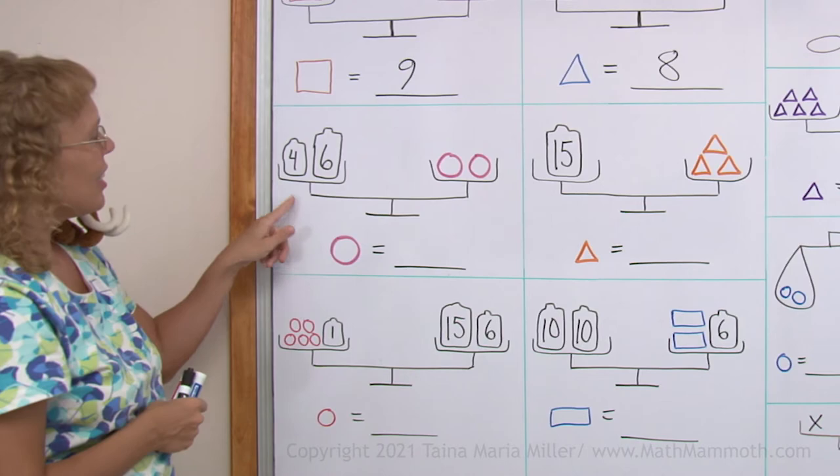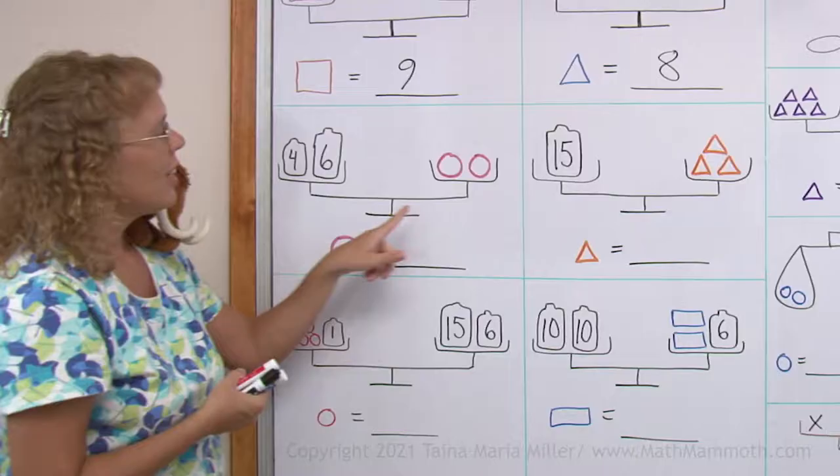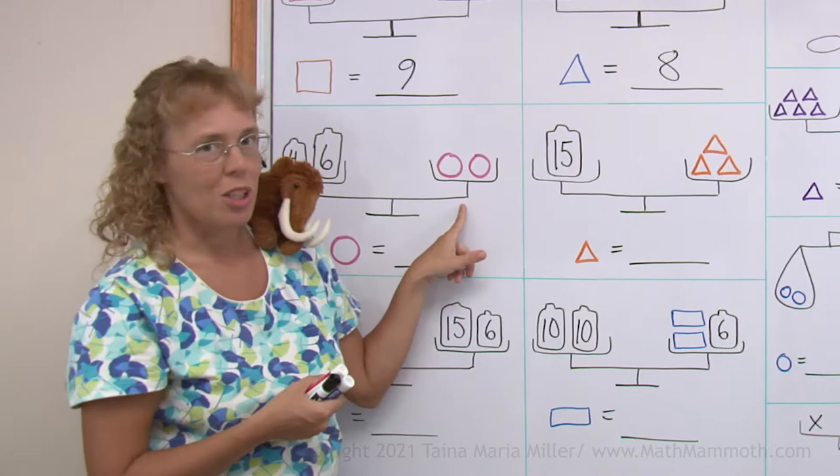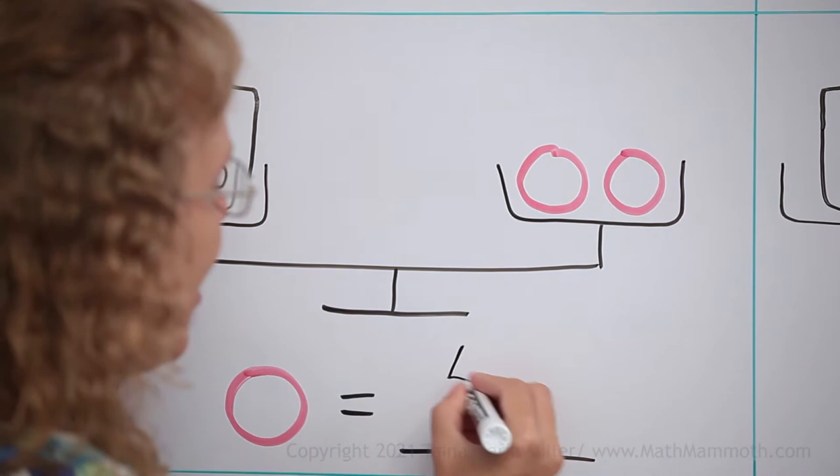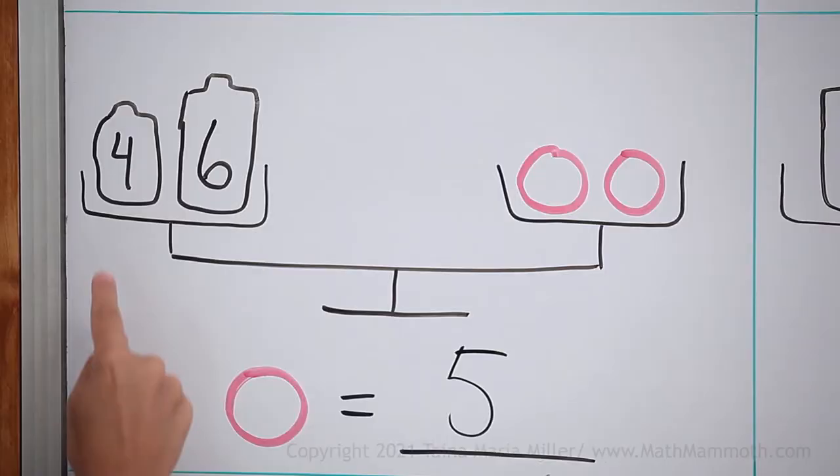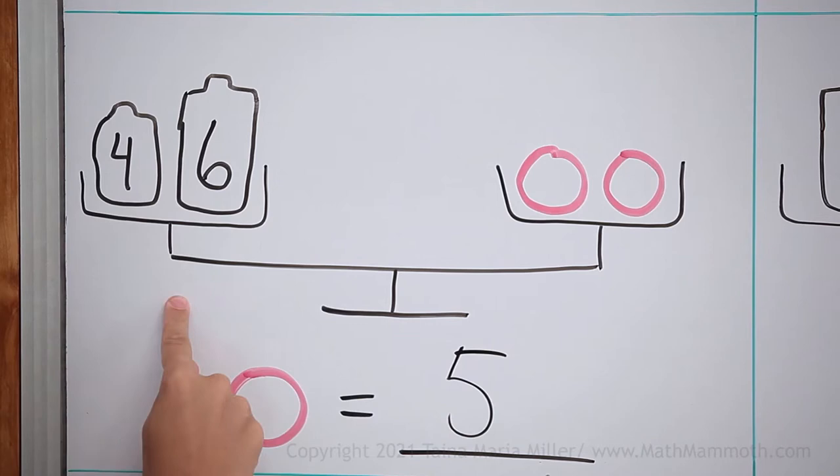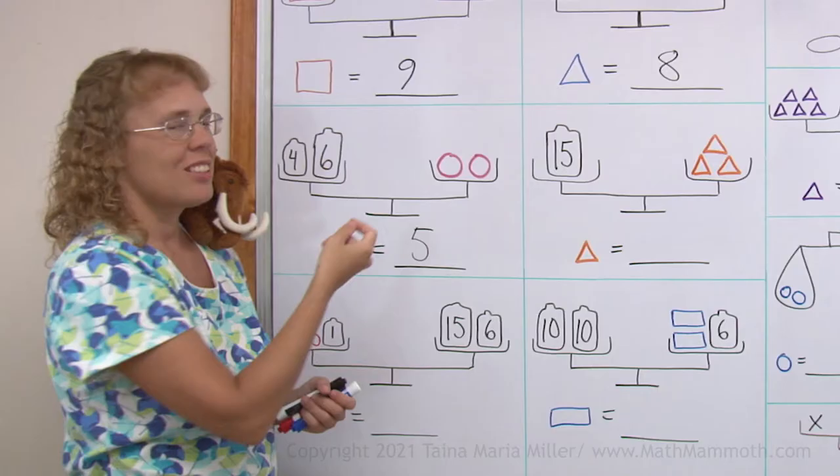On this one, on this side we have 10, 4 plus 6 equals 10. On this side we have two circles, so one circle must equal 5. As an equation, this would be 4 plus 6 equals 2 times an unknown, 2 times x, 2 times a circle.